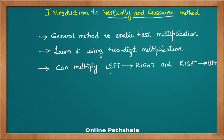Hello and welcome to the next discussion on Vedic mathematics, or if you prefer, fast mathematics or mental mathematics. In this video I'm going to introduce you to a very important concept of doing fast multiplication, known as the vertically and crosswise method of multiplication. This is a general method that enables fast multiplication of any two arbitrary numbers.